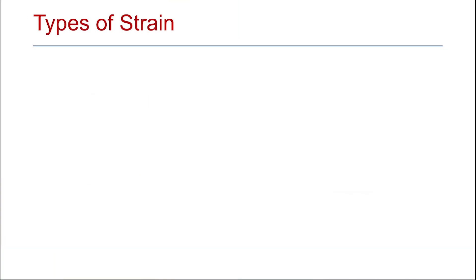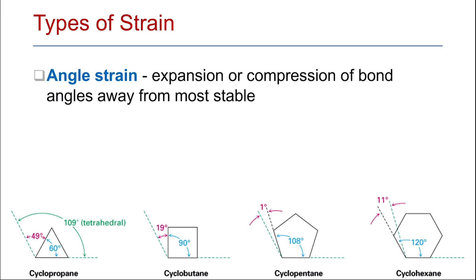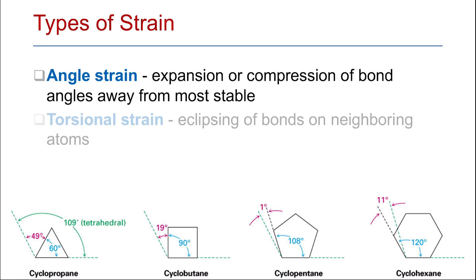Cyclohexane chair conformation. For any ring structure, there are several types of strain that lead to the change in conformation of the cyclic structure from being planar to being non-planar in order to overcome these strains. There are three types of strains. The first one is the angle strain, which is the expansion or compression of bond angles away from the most stable one, which is 109 degrees for the tetrahedral carbon.